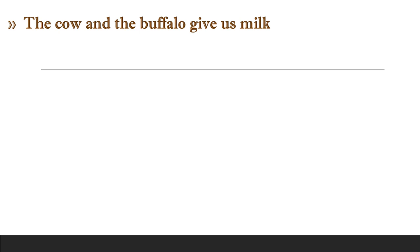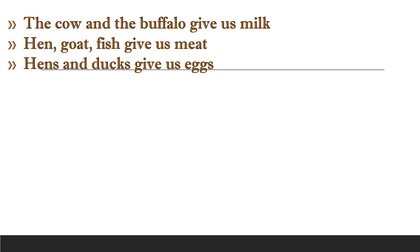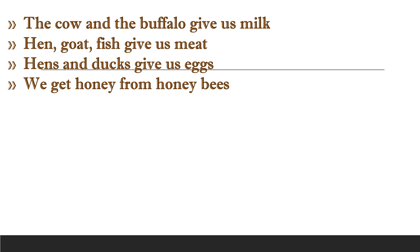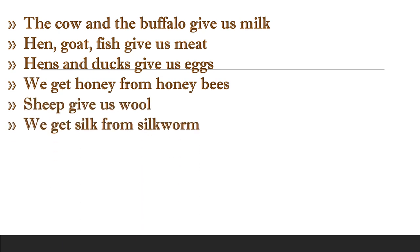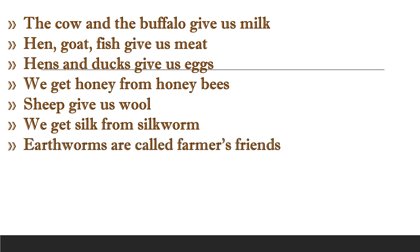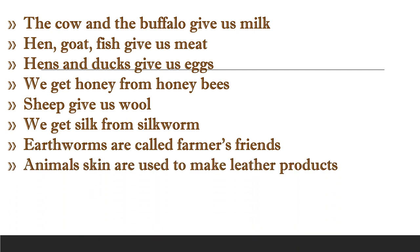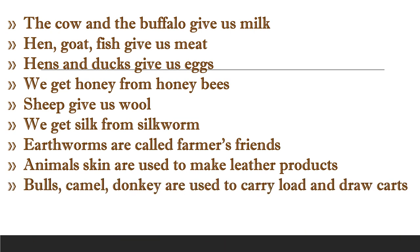So these are the uses of domestic animals. Let's quickly recall: cows and buffaloes give us milk; hen, goat, and fish give us meat; hens give us eggs; we get honey from honeybees; sheep give us wool; we get silk from silkworms; earthworms are farmers' friends; animal skins are used to make leather products; bull, camel, and donkey carry load and draw carts; dogs guard our house. Animals are our friends. They help us in many ways. We should not tease, trouble, or hurt any animals.